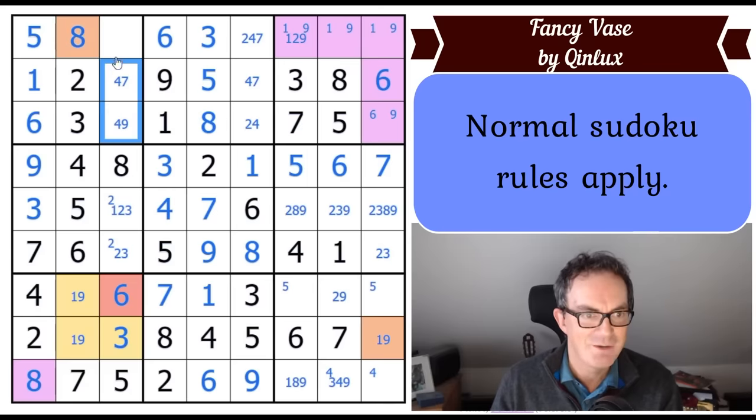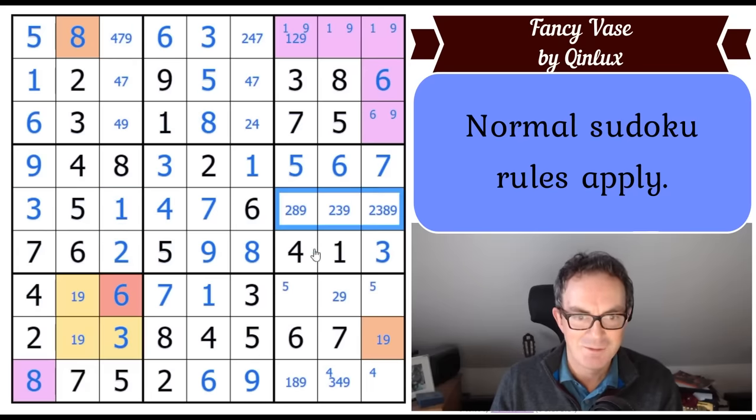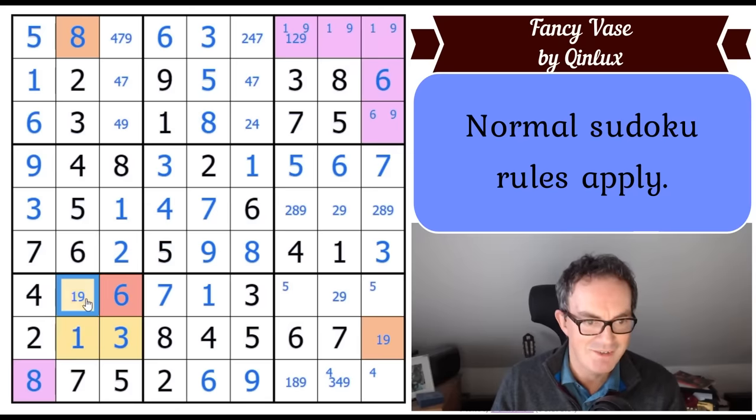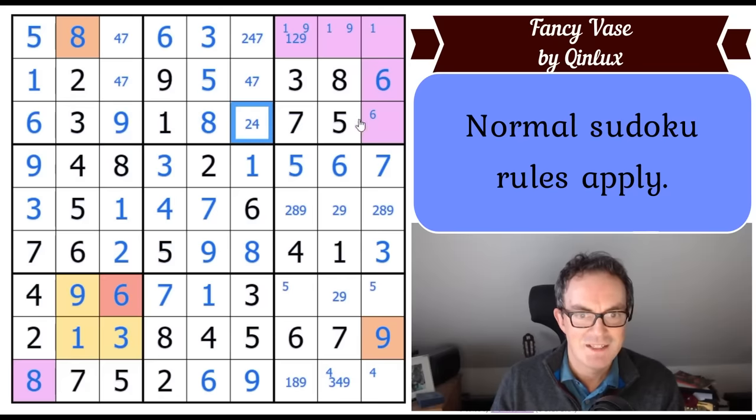We probably should be looking at column one: one, three, six, and eight. Oh yeah, that square is a naked single. Sees three, one, and eight. So that square can only be a six. That gives us a one here. We've now got a four, seven pair, which forces this to be a six.